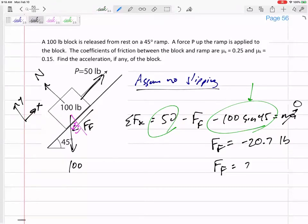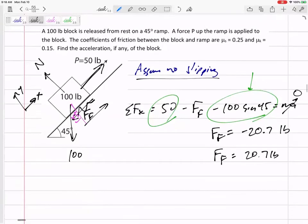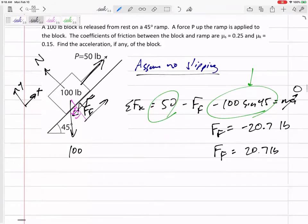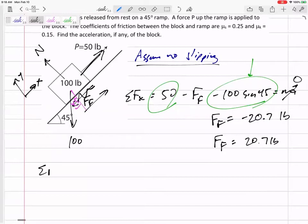But I need to check: is that 20.7 possible? What's the maximum? μs times N. I haven't found N yet, so let me find N.